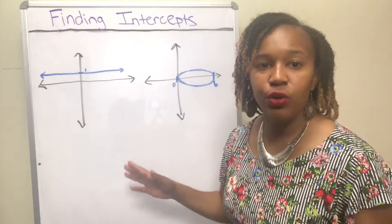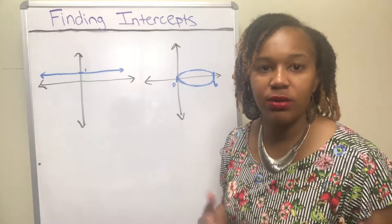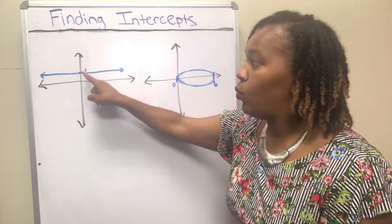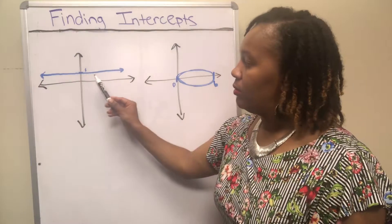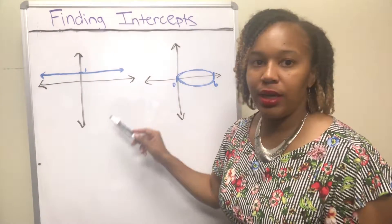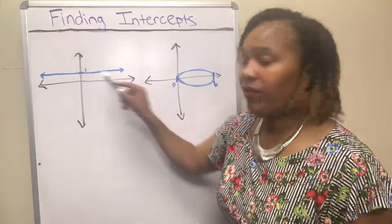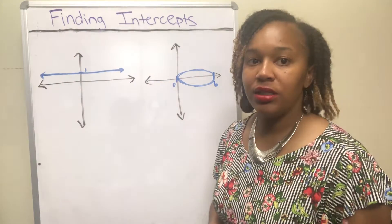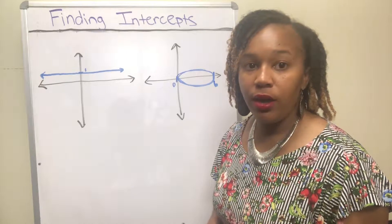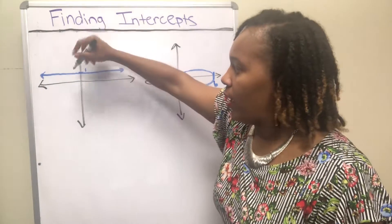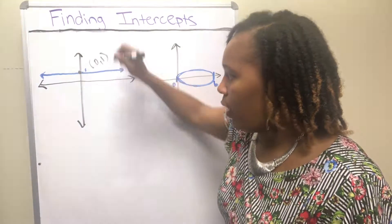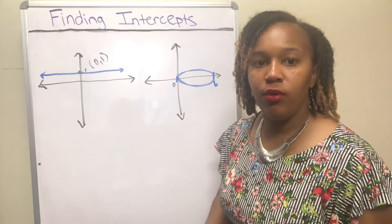I have two graphs here to demonstrate what intercepts look like. This first one is a horizontal line through the y value of one. When you talk about the x intercept — where does this graph cross the x axis — the blue graph does not cross the x axis, so there is no x intercept. However, the y intercept is where the graph crosses the y axis, which is right here at the point zero comma one. So the y intercept of that graph is zero one.